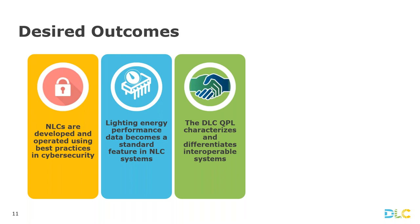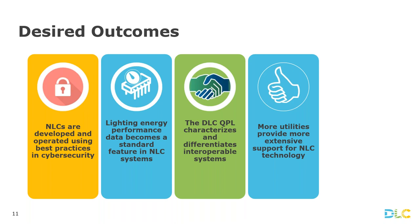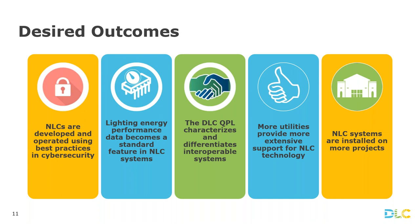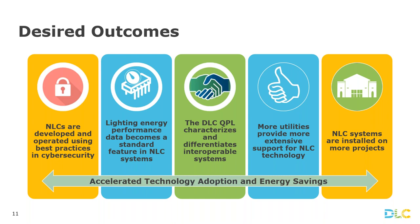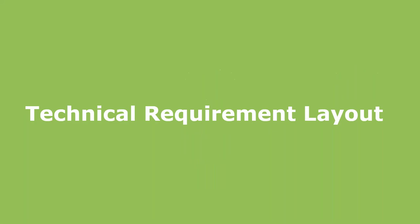This is also a value to designers, specifiers, and end users looking to understand which systems can connect to other building systems. With these enhancements, we want to continue to support utilities and energy efficiency programs in providing more extensive support for the technology, and then to see more network lighting control systems installed on more projects — all of this together driving accelerated technology adoption and energy savings. Those are the things that have driven the draft 4.0 requirements, and we look forward to your comments. I'll now pass things over to Levin.